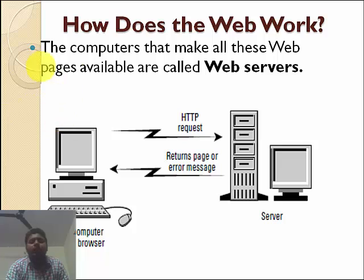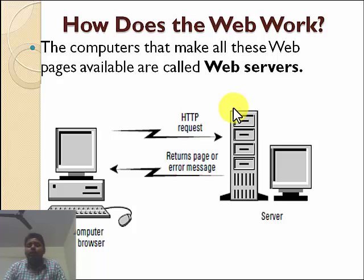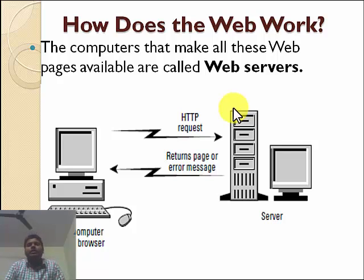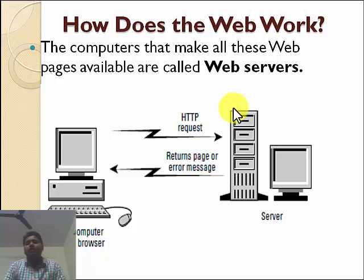Whenever we type google.com and press enter, a request is generated and goes to the server. The server does some processing — for example, if you are logging into Facebook, the server checks your username and password. If correct, it sends your home page; if the password is wrong, it sends an error message saying the username and password are incorrect.